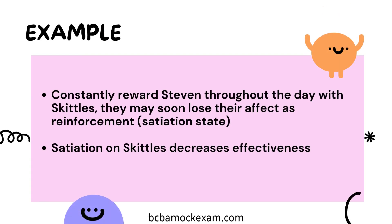Suppose that Stephen's favorite snack is Skittles and he finds them highly rewarding. If he is constantly rewarded throughout the day with Skittles for various behaviors, a state of satiation might develop. Satiation occurs when an individual has been exposed to a reinforcement — in this case, Skittles — excessively and repeatedly, leading to a decrease in its value as a reward. The more Stephen receives Skittles as reinforcement, the less effective they become in motivating his behavior. This diminishing effectiveness is a consequence of satiation, where overexposure to Skittles has decreased their desirability and value to Stephen.